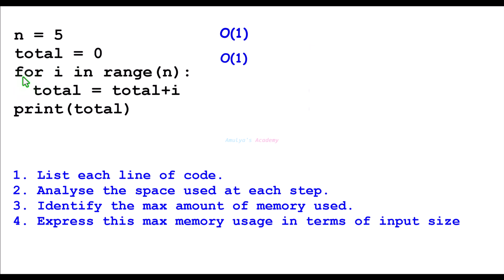Then here in the for loop, i is a variable. It holds a single integer at a time, so constant space, Big O of 1. And here, this range function - range is a generator-like object. It uses constant space, so Big O of 1. Then total equals total plus i.